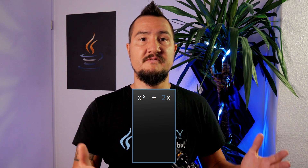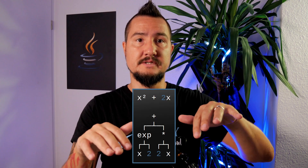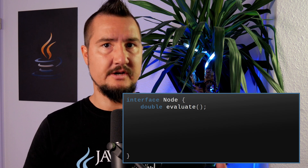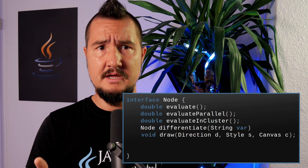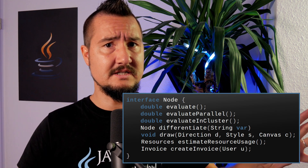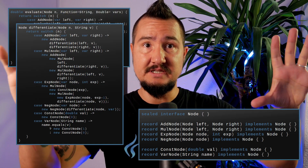For the last example, let's model something more akin to an application-specific domain: an arithmetic expression with variables. Such expressions are best modeled as trees, where each inner node is an operation like addition or multiplication, and the leaves are numbers or variables. Even without sealed types and records, we'd probably model that as an interface Node with specific implementations for each operation and value. Say you want to evaluate such an expression, or evaluate sub-expressions in parallel, or differentiate, format, estimate computation time, resource use, and bill users. That's a lot of very diverse functionality to add to a nice little node interface. But thanks to the power of algebraic data types and pattern matching, we don't have to do that — make Node sealed, turn the implementations into records, and use pattern matching methods outside of these types to add functionality.